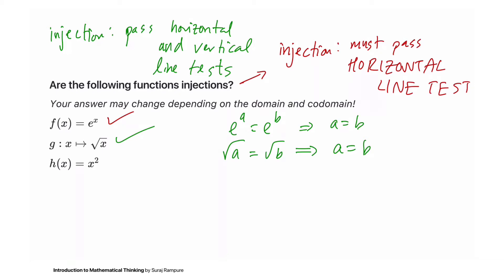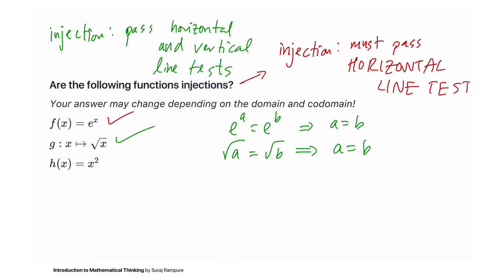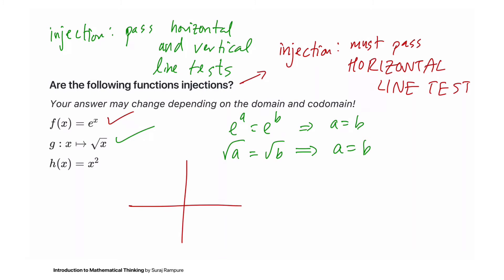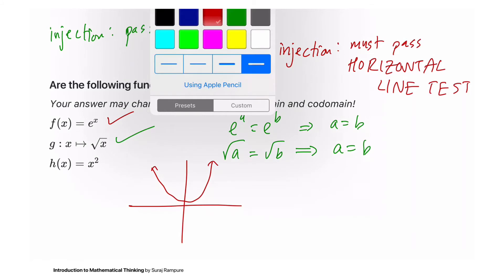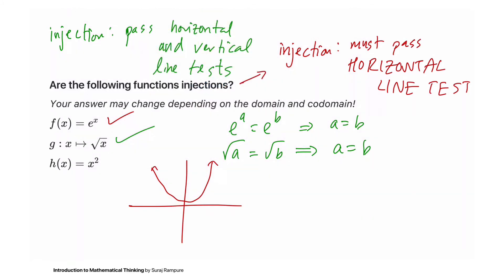What about h(x) = x²? Is this an injection? It passes the vertical line test — it's a function — but does it pass the horizontal line test? No. Anywhere you draw a horizontal line, except at the vertex, it hits two points. So x² fails the horizontal line test.